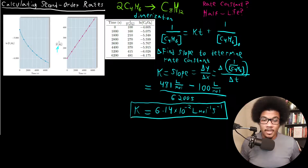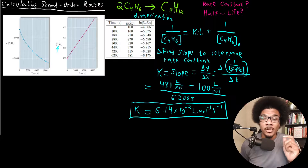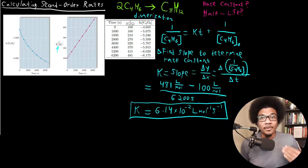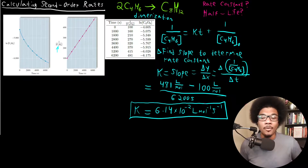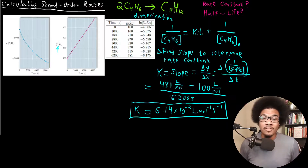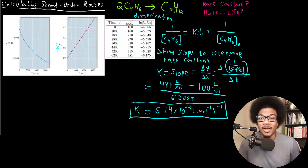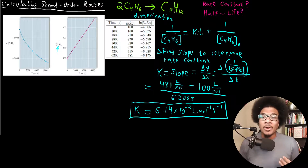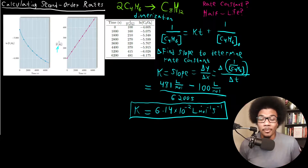Notice that the rate constant for a second order reaction has different units than a first order reaction. For a first order reaction, the rate constant is just per time — per second, per minute, per hour. Here, we're measuring liters per mole per second. That's because in a first order reaction the y-variable is the natural log of concentration, which is unitless, whereas here it's the inverse of concentration, which carries a unit.